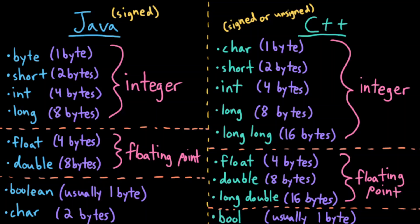Let's compare the data types between Java and C++. In Java we have four basic integer types.